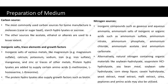Inorganic salts, trace elements, and growth factors are also required. Inorganic salts of various metals — such as magnesium sulphate, calcium, potassium, sodium, iron sulphate, manganese, and zinc — or traces of other metals can be used. Protein hydrolysates are added to supply certain amino acids like L-methionine, L-homoserine, and L-threonine.